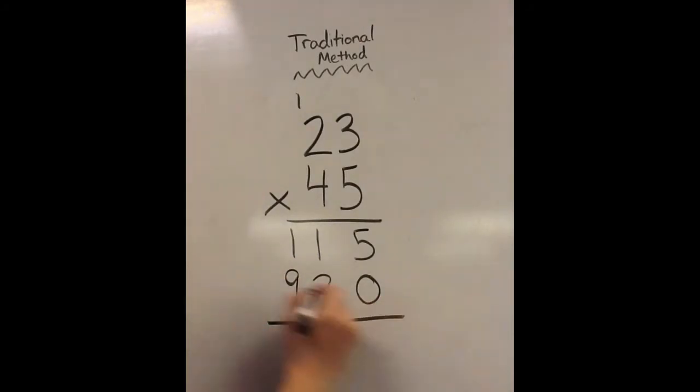Then again, it becomes an addition problem. 5 plus 0 is 5. 1 plus 2 is 3. 9 plus 1 is 10.